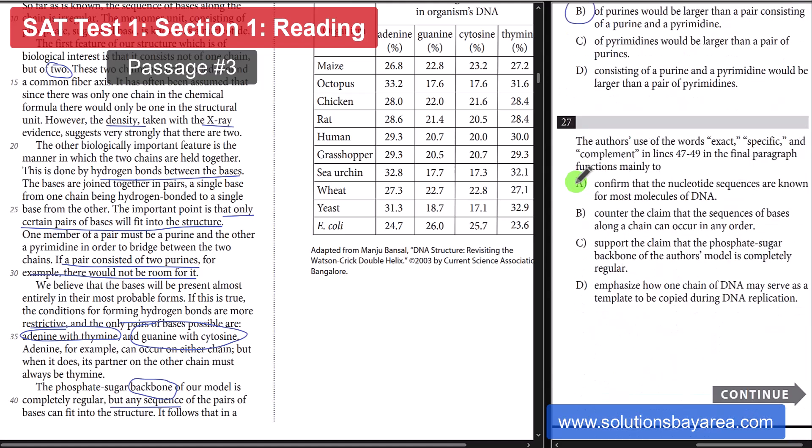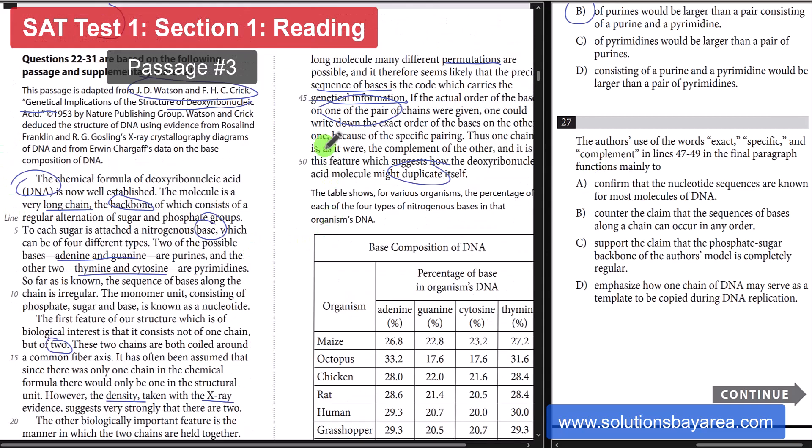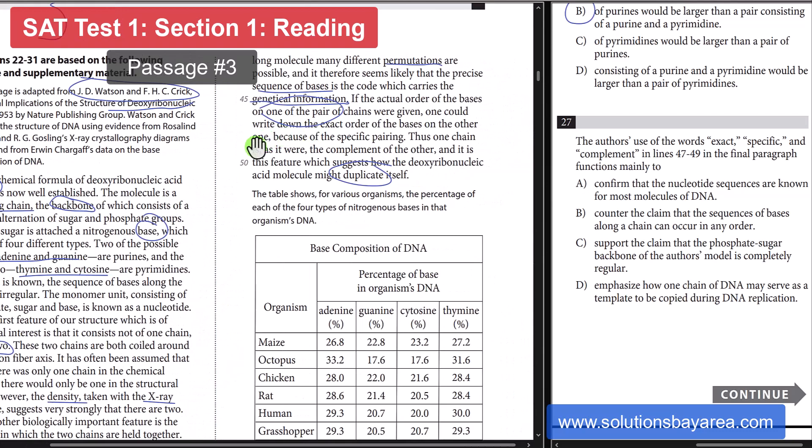Moving on to number 27. Exact, specific, complement. Why does the author use those words on 47 to 49? So, taking a look here at 47 to 49, we've got if the actual order of the bases on one of the pair of chains were given, one could write down the exact order of the bases on the other. Again, that's just to show that the pairing is very, very specific. So, the answer is going to be D.